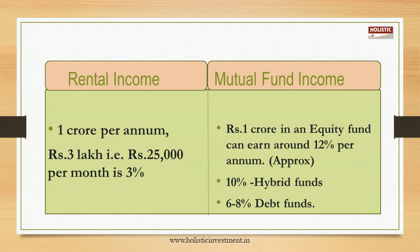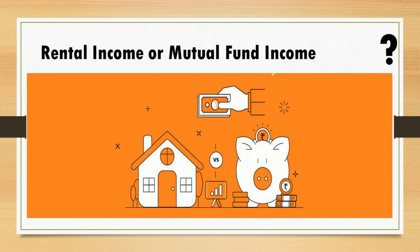Now let's take an example: if you have invested 1 crore in rental income, you get only 3 lakhs in a year, which is a 3 percent return. The same 1 crore invested in equity funds can earn around 12 percent per annum. If invested in hybrid funds, that can earn up to 10 percent, and in debt funds you can earn up to 6 to 8 percent.